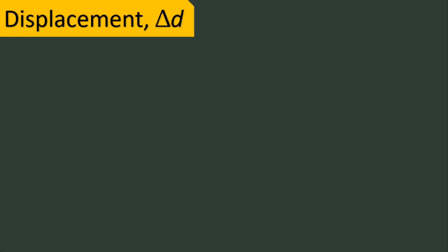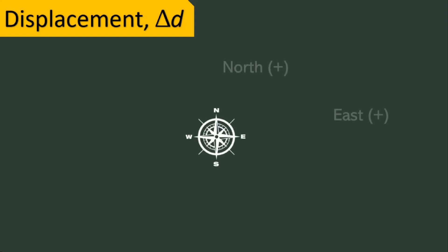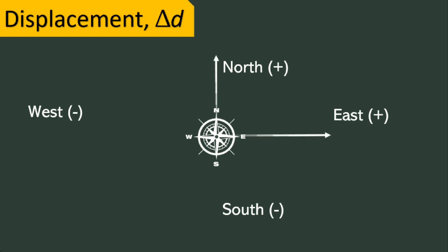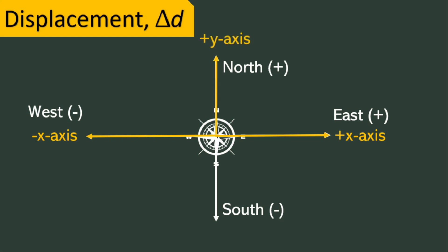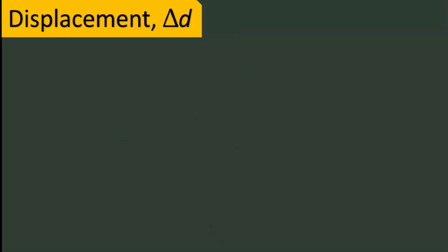For vector quantities like displacement, east and north are considered as positive directions, while west and south are negative directions. These signs are in reference to the coordinate system in which the east direction lies along the positive x-axis and the west direction lies along the negative x-axis. The north direction lies along the positive y-axis and the south direction lies along the negative y-axis.